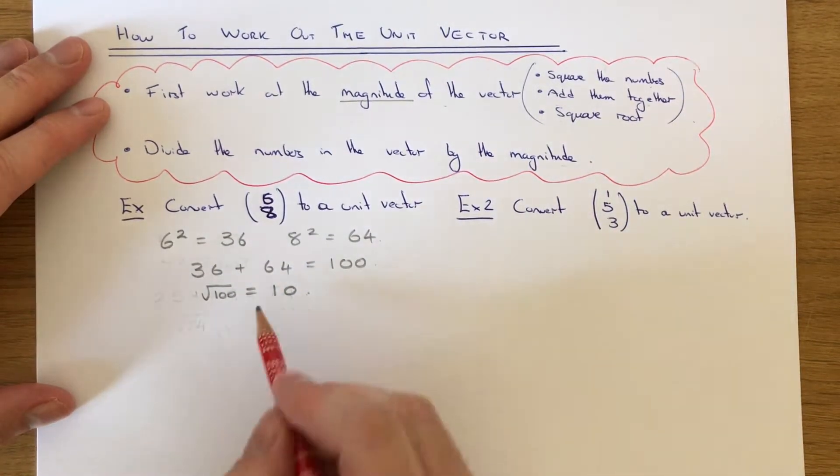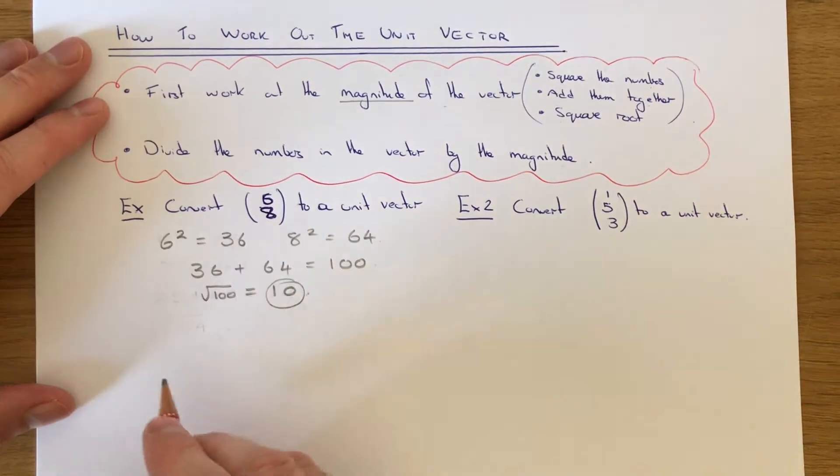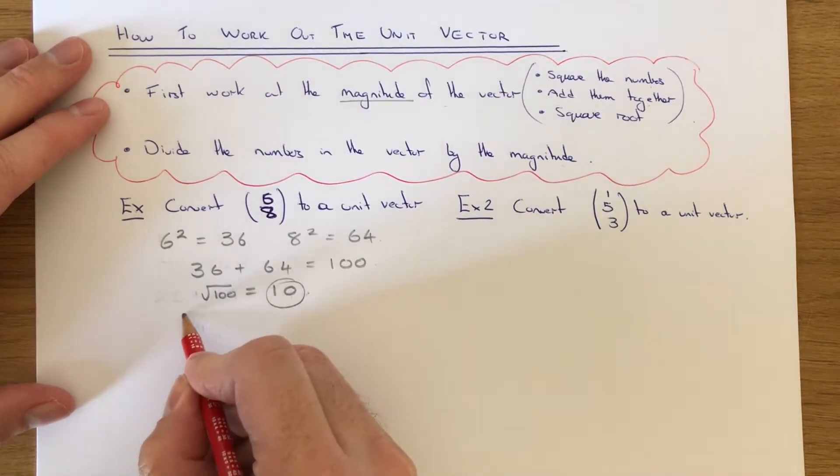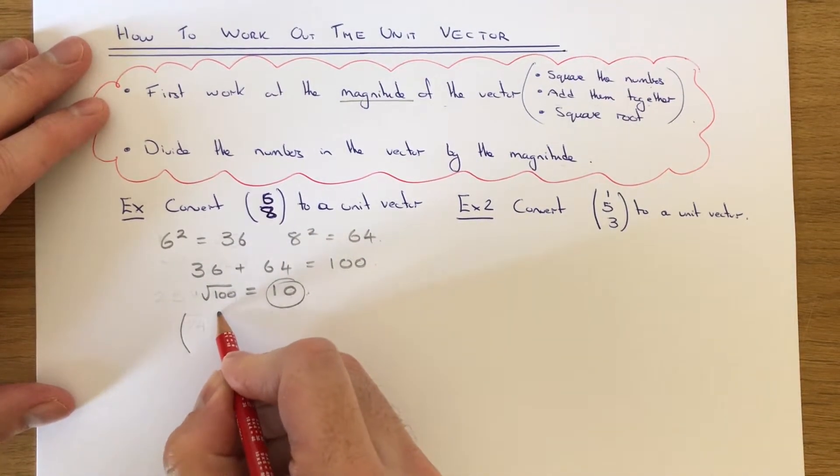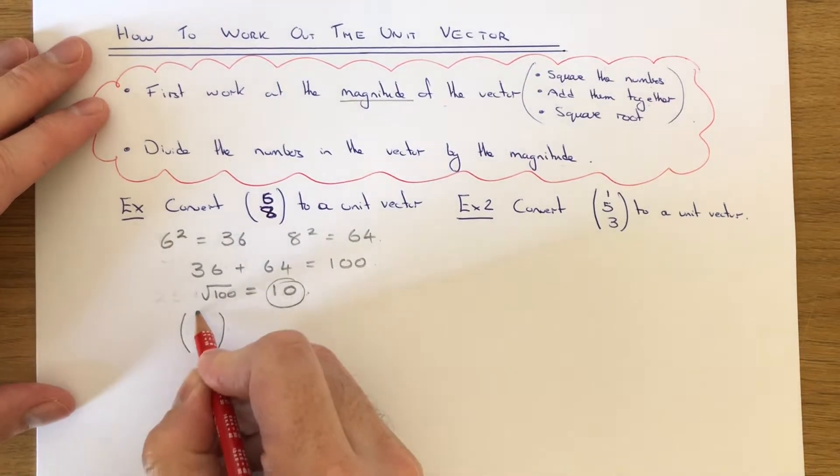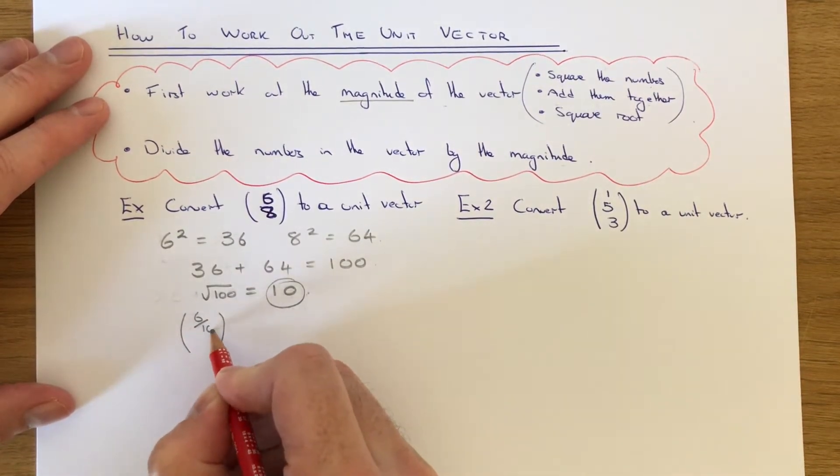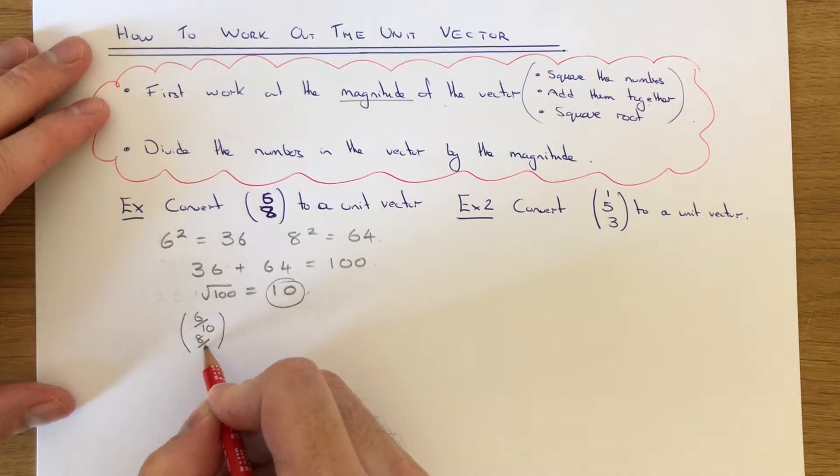Once we have the magnitude, we can divide both the numbers in our vector by 10. So we'll get 6 over 10 and 8 over 10.